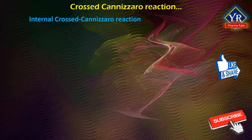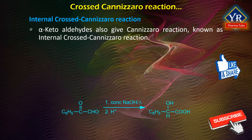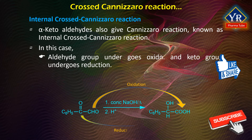Internal crossed Cannizzaro reaction: alpha keto aldehydes also give a Cannizzaro reaction known as the internal crossed Cannizzaro reaction. In this case, the aldehyde group undergoes oxidation and the keto group undergoes reduction. The keto group should have no alpha hydrogen.